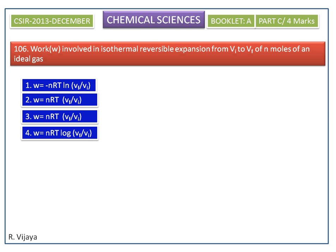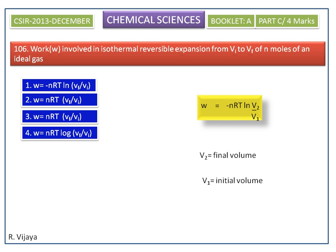The work done in isothermal expansion is W is equal to minus nRT ln V2 by V1, where V2 is the final volume and V1 is the initial volume.